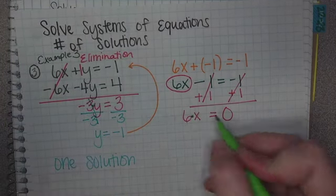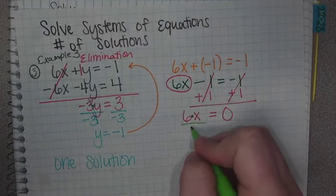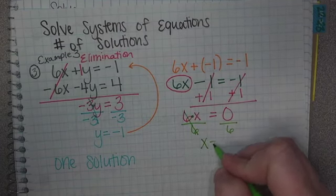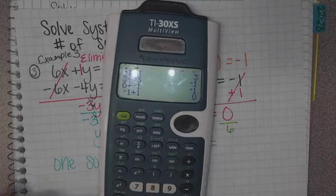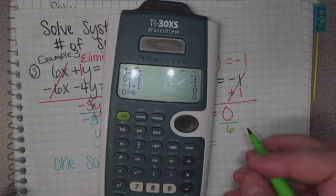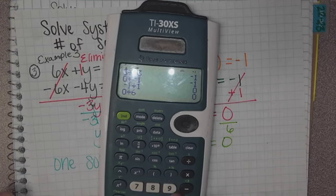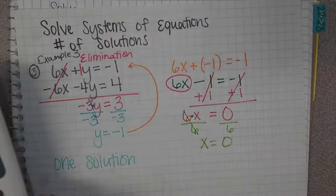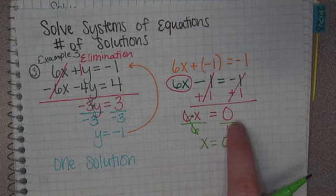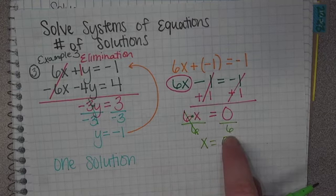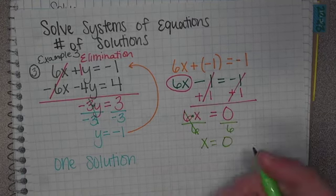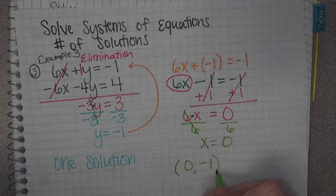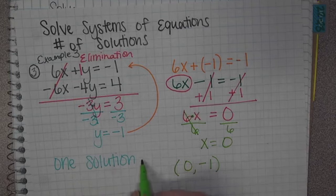We have 6 times x. The opposite of multiply by 6 is divide. x equals 0 divided by 6 is 0. Notice, if you type that in backwards, it will give you an error. You can't divide by 0. Make sure that you keep in mind, you have to do the top divided by the bottom. Our x value is 0. Then it would be 0, negative 1. And that is our one solution.